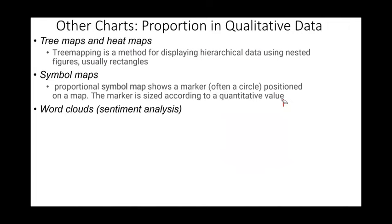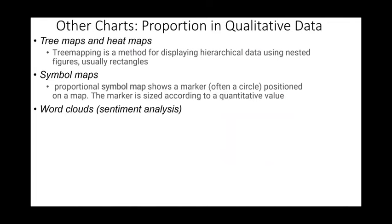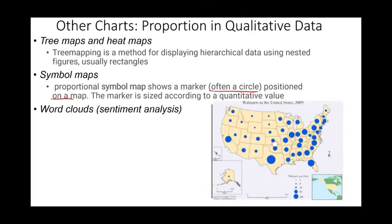Another one is symbol maps. It's basically using markers, often a circle positioned on a map. The marker is sized according to the quantitative value. Something that looks like this, the location of Walmart stores in the United States. For example, here if it's the biggest circle, it means 100 stores. For example, Texas, California, Florida, they have 100 stores. Here we see less than, maybe around five stores. So it's easier to see the data like this.